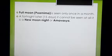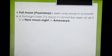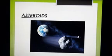Because of changes in the visible size of the Moon, sometimes it is a full moon and sometimes a new moon. Full moon is also known as Purnima and can be seen only once a month. After 15 days, or a fortnight, you will not be able to see it at all — that time it is called new moon night or Amavasya.